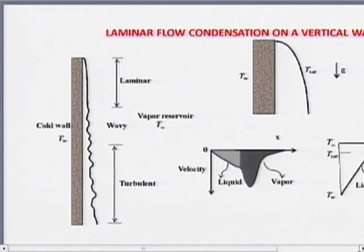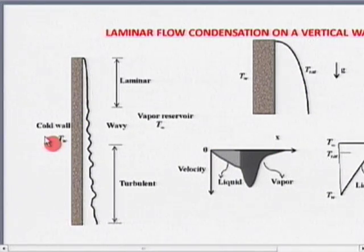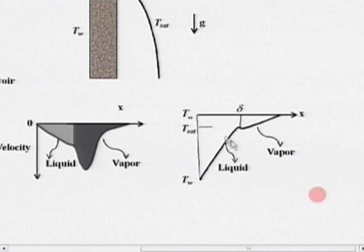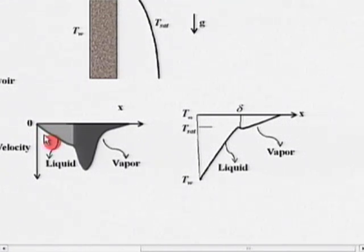What actually happens? The wall temperature is lower than the reservoir temperature. Imagine the wall is kept in a big room filled with steam at atmospheric pressure, maintained at a saturation temperature of 100°C. If the wall temperature is at room temperature, condensation starts occurring on the wall. Close to the plate there is a liquid film; subsequent to that vapour is also there. I have plotted the velocity of liquid and vapour — vapour will have higher velocity compared to the liquid.